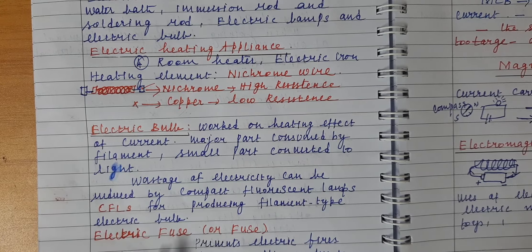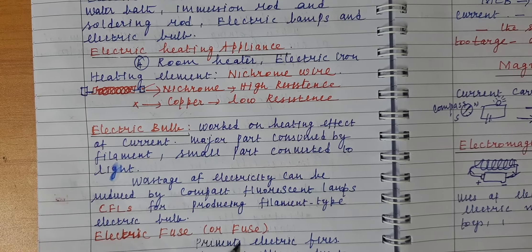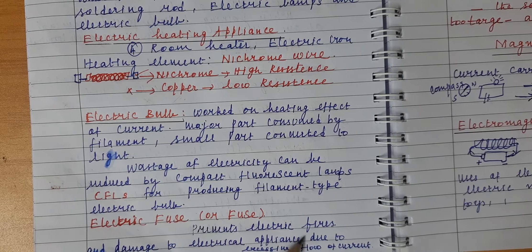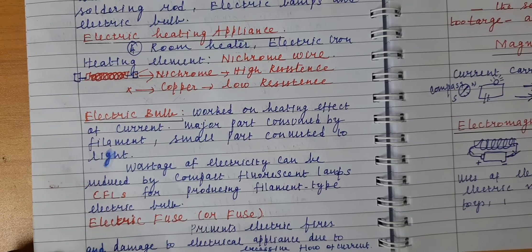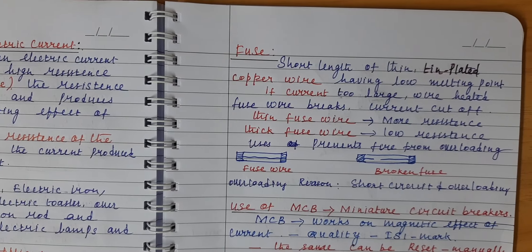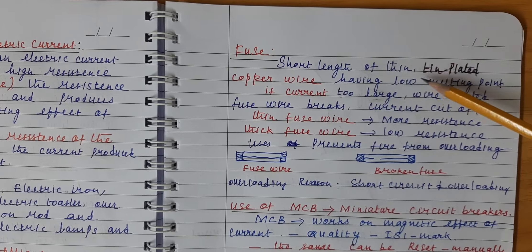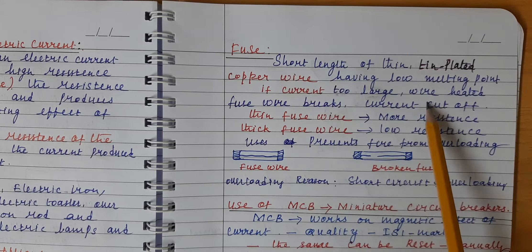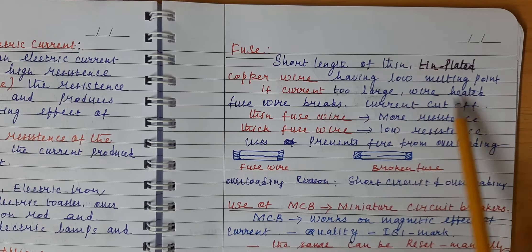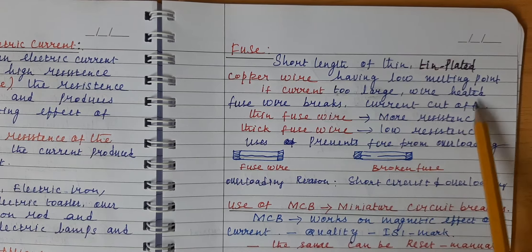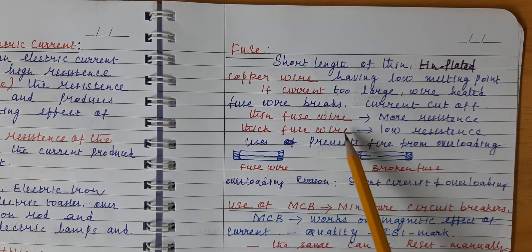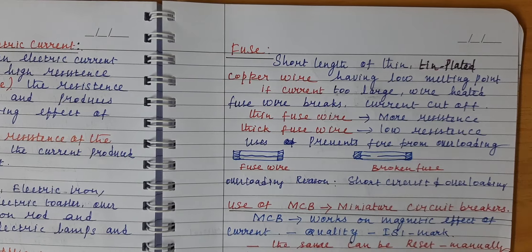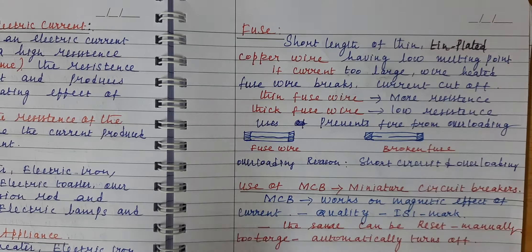Electric fuse: it prevents electric fires and damage to electrical appliances due to excessive flow of electric current. An electric fuse is made up of thin, plated copper wire — very thin. If the current is too large, the fuse wire heats up and breaks, cutting off the current. Thick fuse wire has low resistance; thin fuse wire has high resistance.